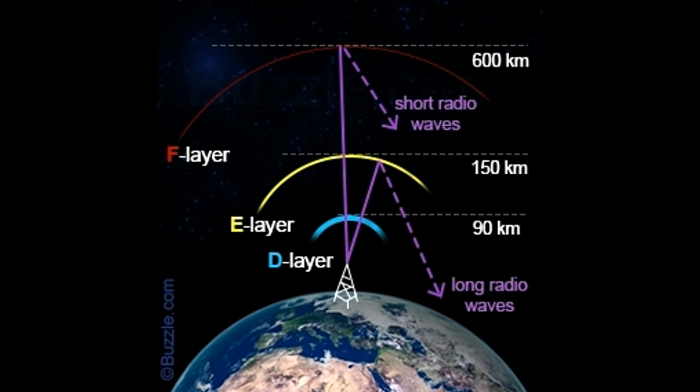The ionosphere reflects radio waves back to Earth, thus facilitating radio communication. Free electrons in the ionosphere aid propagation of electromagnetic waves. Research is being done on the use of electromagnetic tethers — conducting wires or cables that use the ionosphere to extract energy from the Earth's magnetic field.